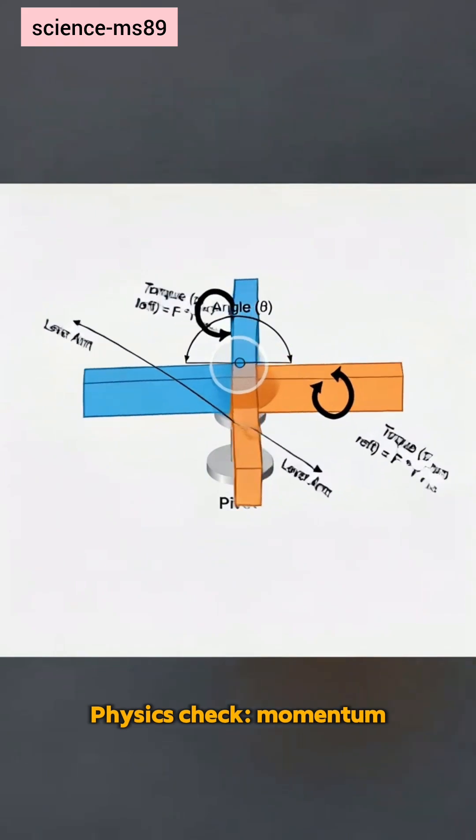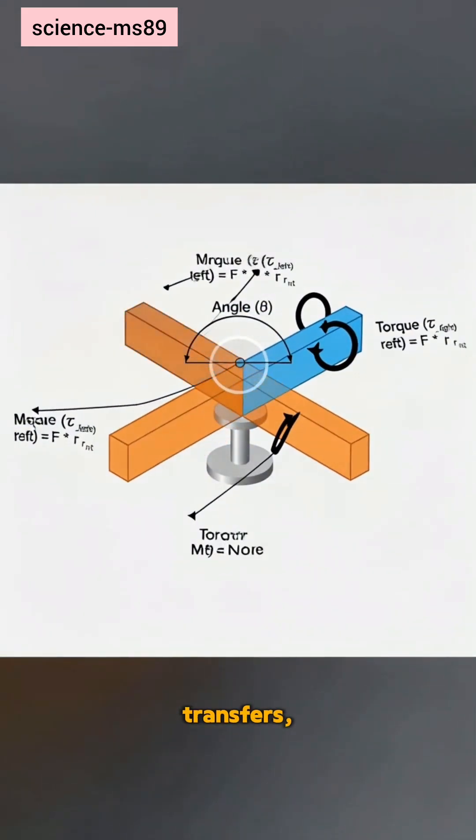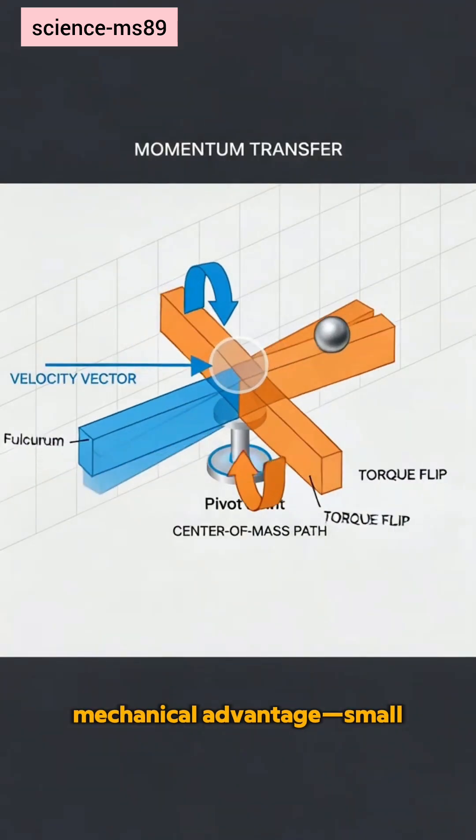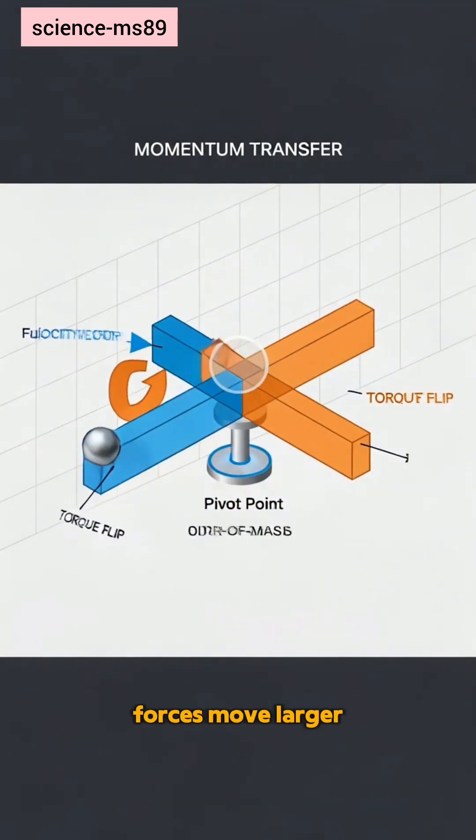Physics check. Momentum transfers. The center of mass crosses the pivot, and lever arms create mechanical advantage. Small forces move larger loads.